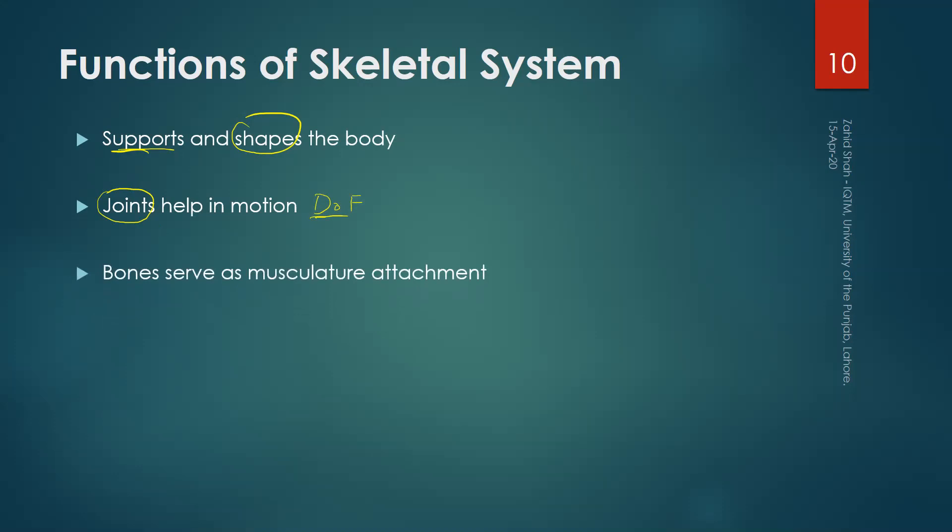Bones serve as musculature attachment as well. Muscles attach to the bones. Degree of freedom is provided by the joints, but the power for the movement is provided by the muscles, and that power is provided through the attachment. Muscles attach to bone through another structure called tendons. Tendons are the ending part of the muscle that attaches to the bone.